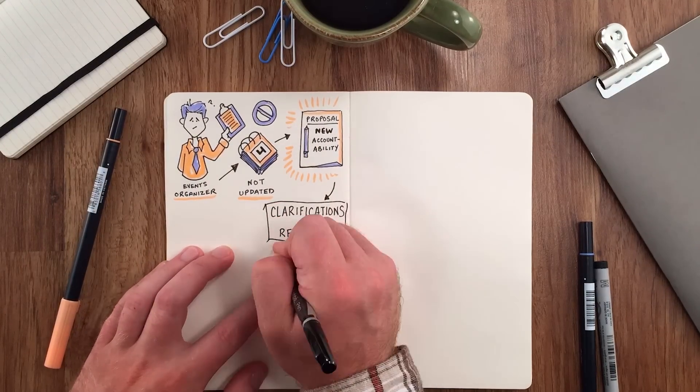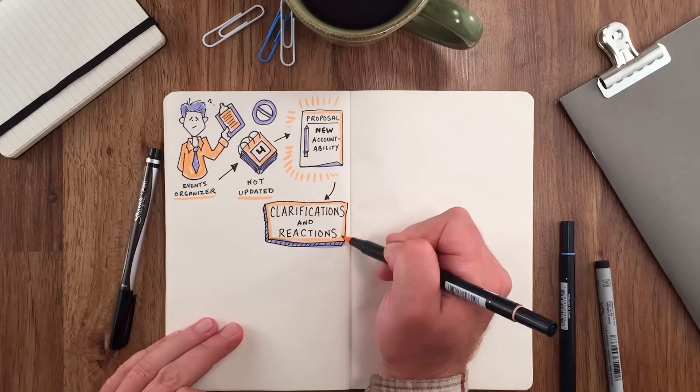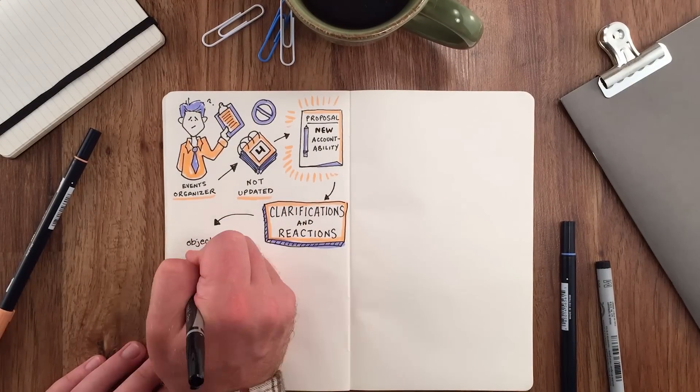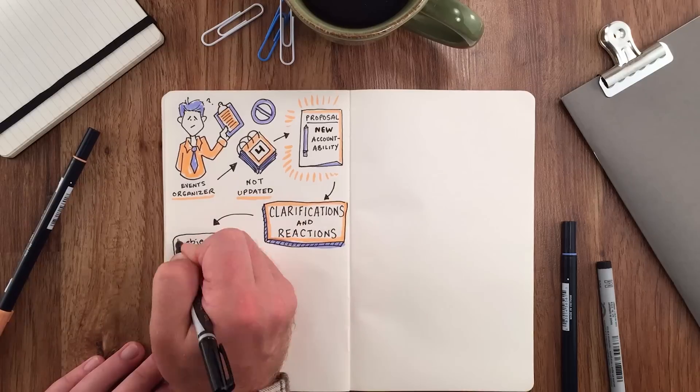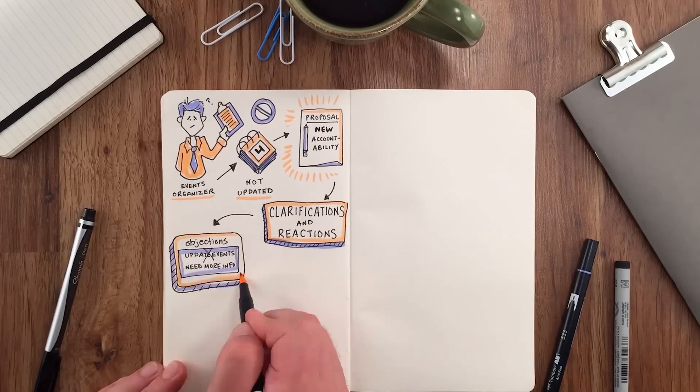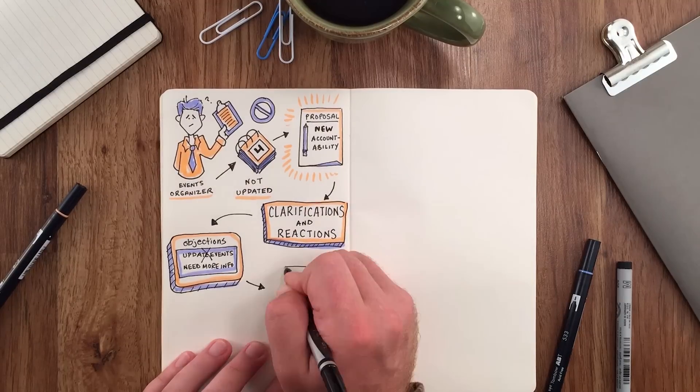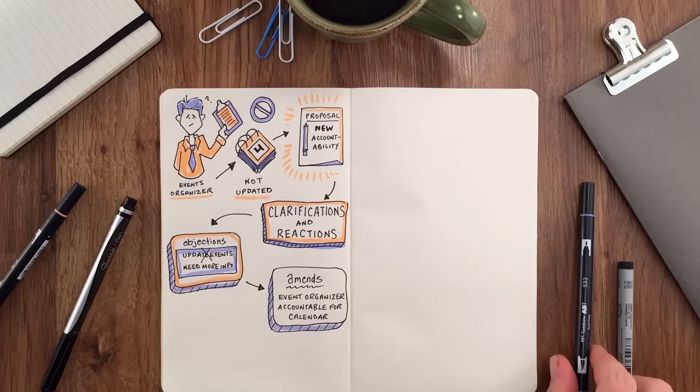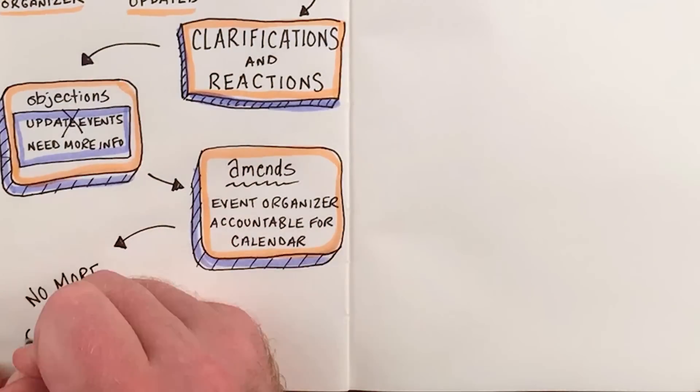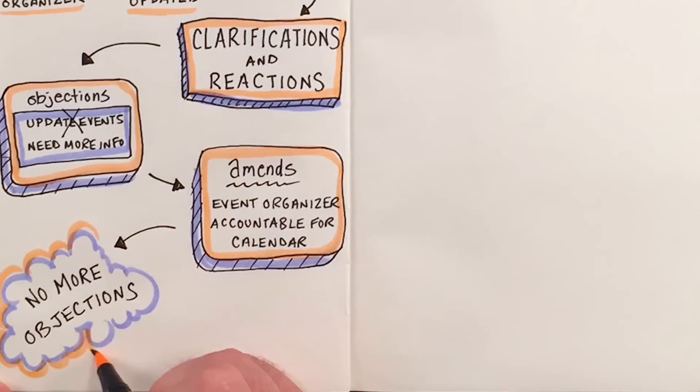After a structured process involving some clarification and reactions, the meeting moves on to the objections round where the marketing person says he can't post about events because he doesn't have the clear information on when they're scheduled. They amend the proposal to also make the events organizer role accountable for publishing a calendar of events. Once there are no more objections, the proposal gets adopted.